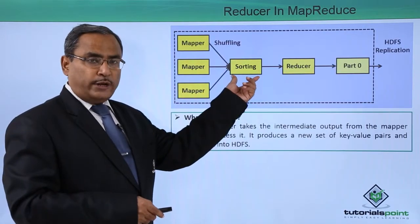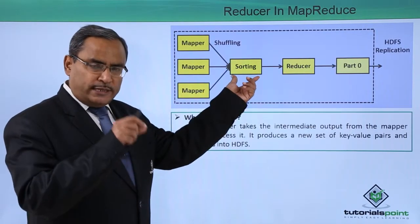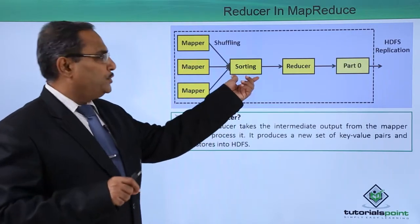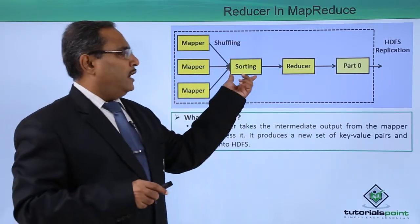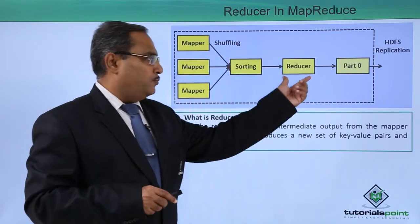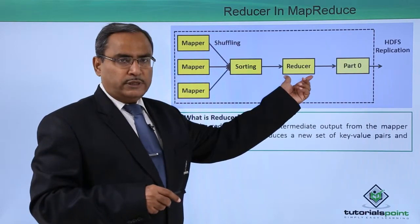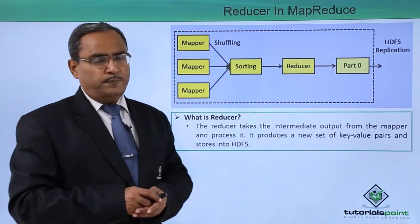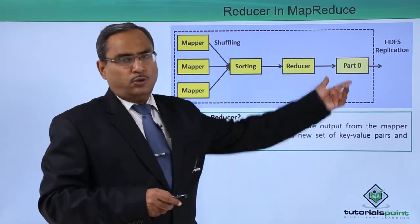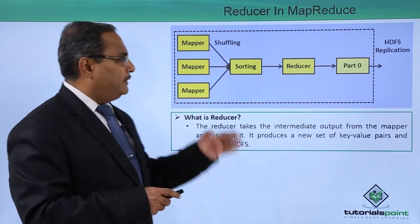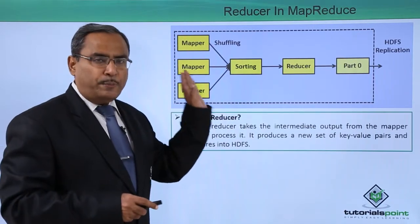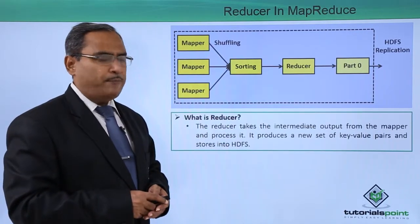So in the case of sorting, the values in the keys will be the decisive factor for doing the sorting operation. Then after doing the shuffling and sorting, the output will be going to the reducer. The reducer will put the output accordingly and that will be stored on part 0. That is the purpose and operation of our reducer in MapReduce.